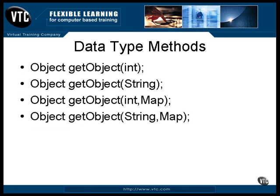The database value is returned here as a Java object. The type of object depends on the type of data. If the value is an SQL null, the return is a Java null. A map object can be used to map the database value types to Java object types. If you don't supply the map, a call is made to the getTypeMap method of the connection object that you created earlier.